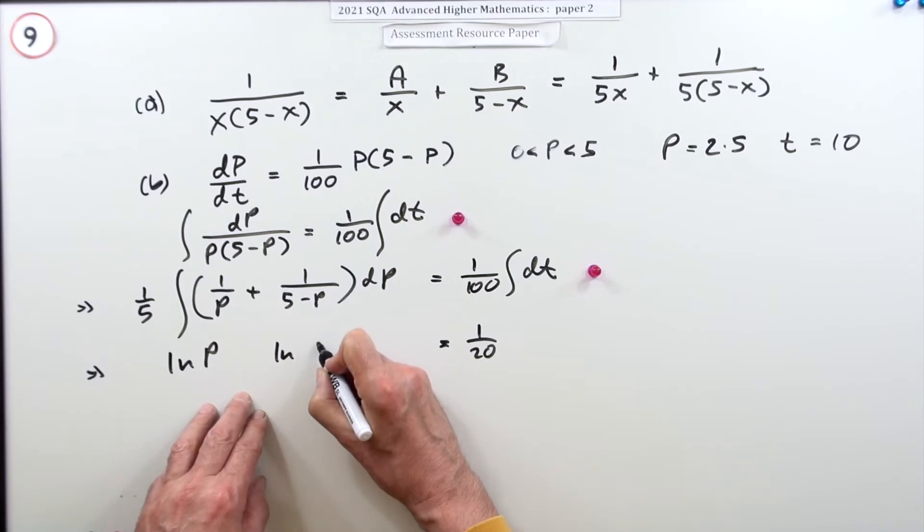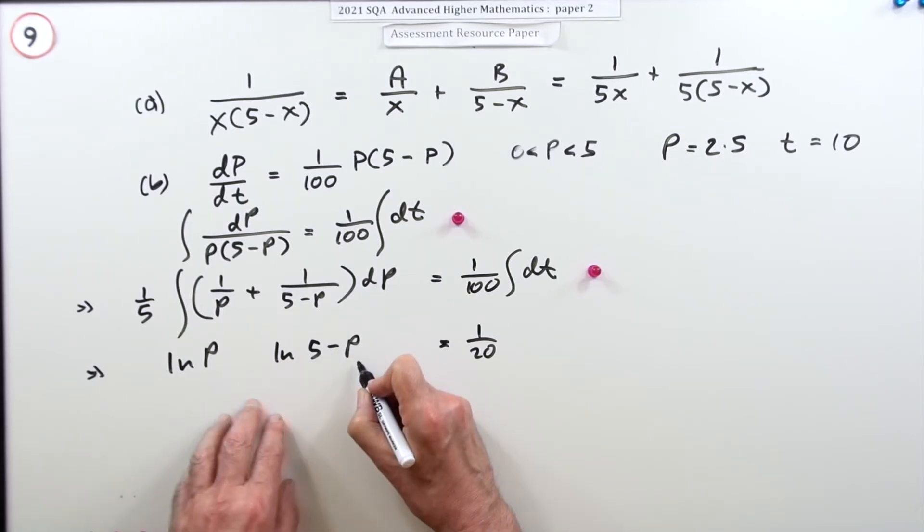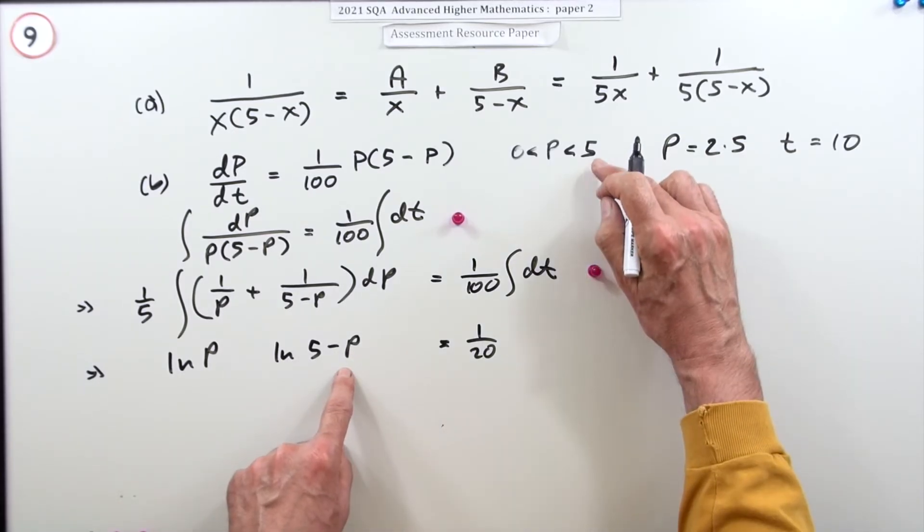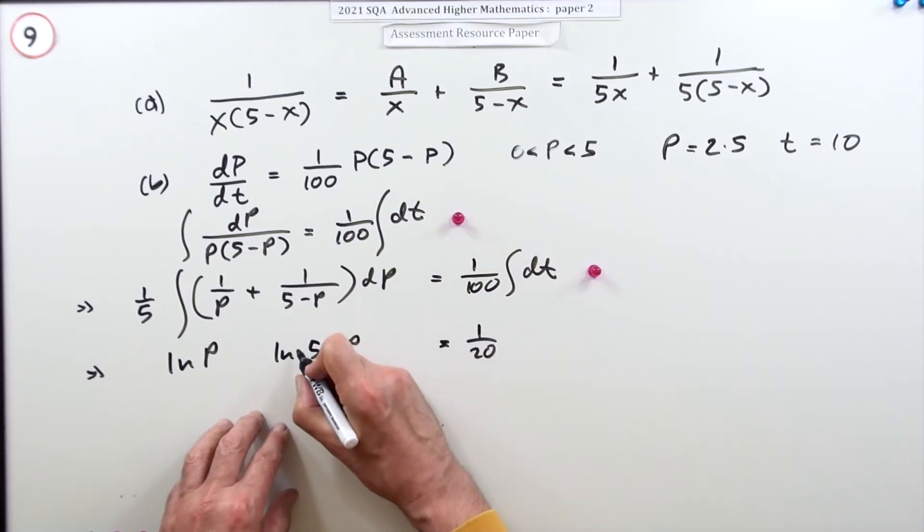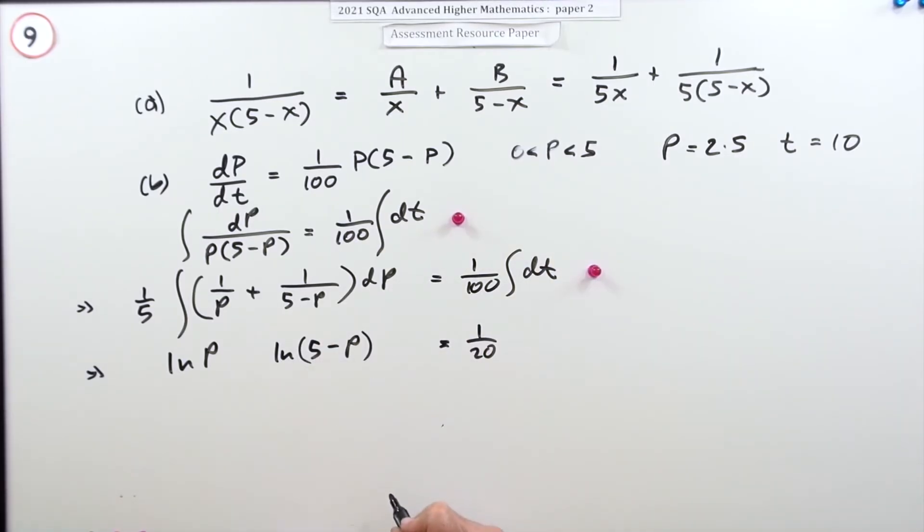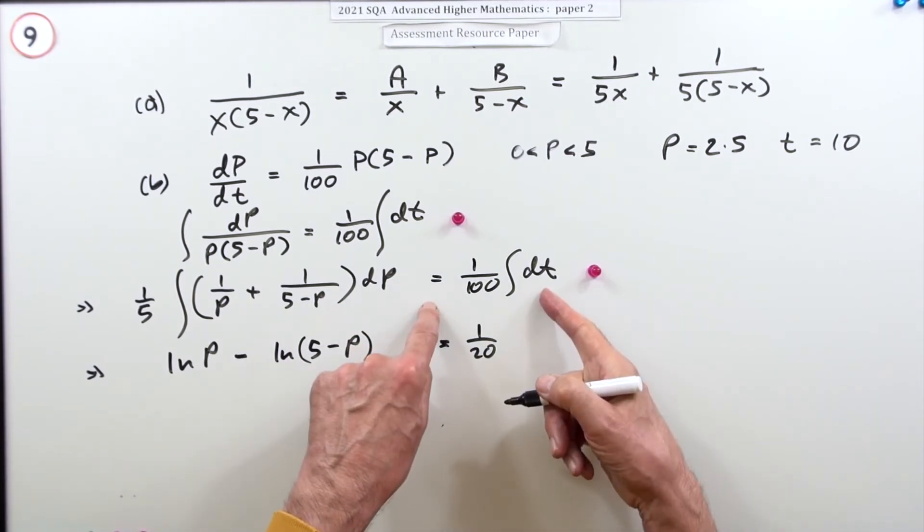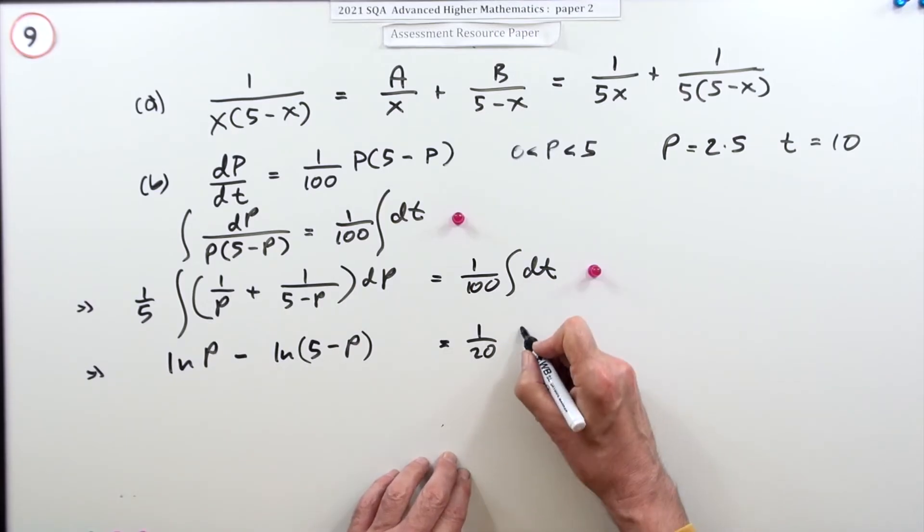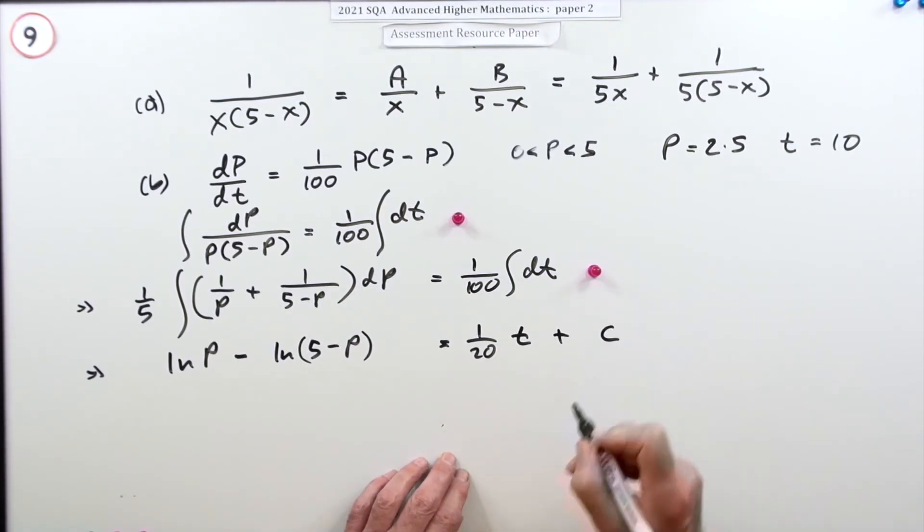That goes to ln of (5 minus P), which looks as if it could go negative, but it can't because P has to be less than five, so I'm just putting round brackets there. But divide by the inner derivative, which is negative one, so that's minus that. Differentiate this side and that's going to be t, and then just put a plus c. Now there was two marks there, I'll just put it down as there and there.